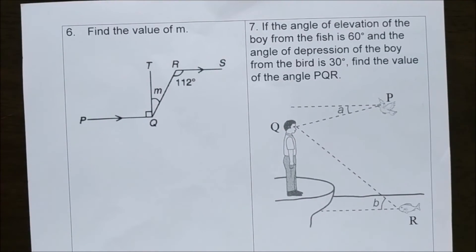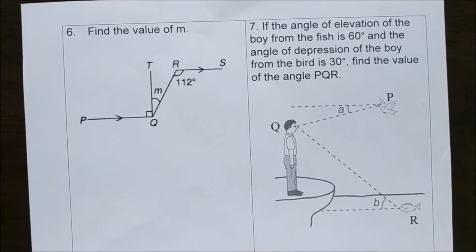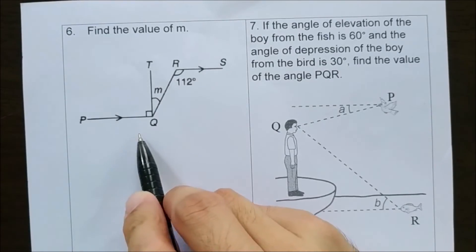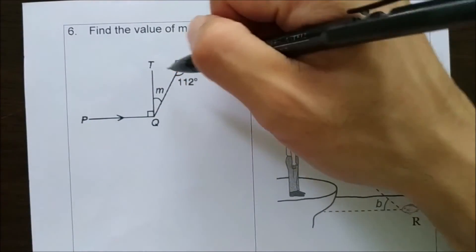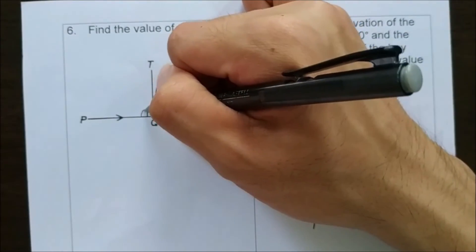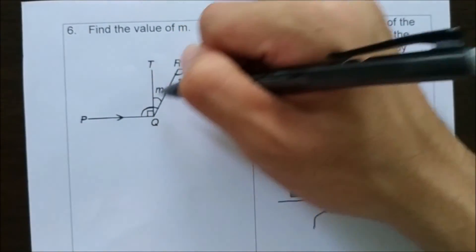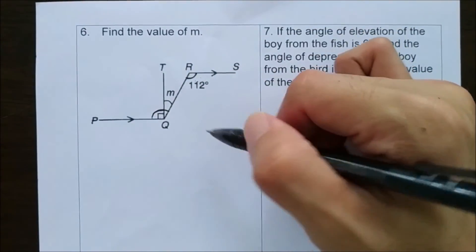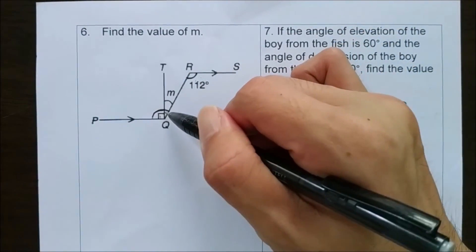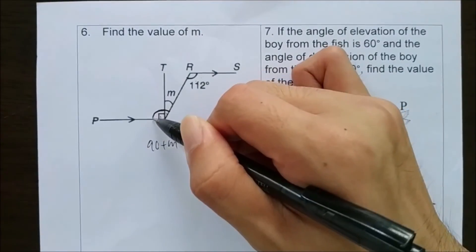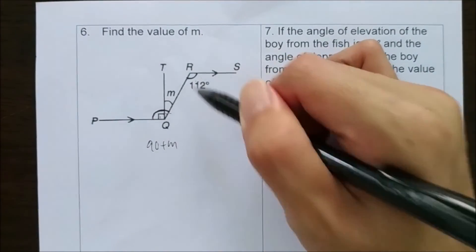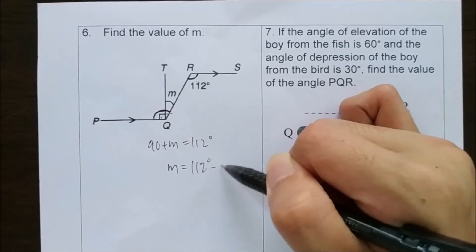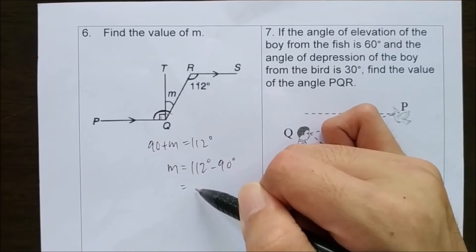Question number 6: find the value of M. Given that line RS and line PQ are a pair of parallel lines, this angle and the total angle here are a pair of alternate angles. Alternate angles have the same value, meaning 90 plus M equals 112. So M equals 112 minus 90, which gives 22.